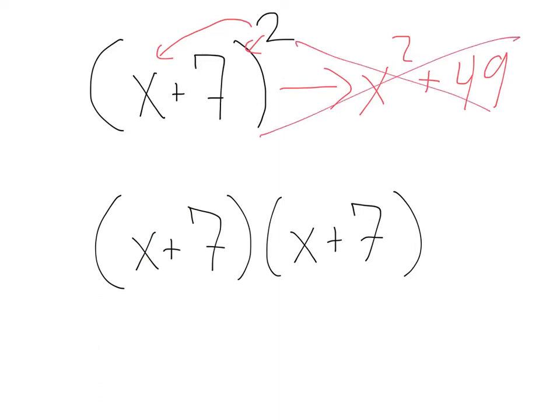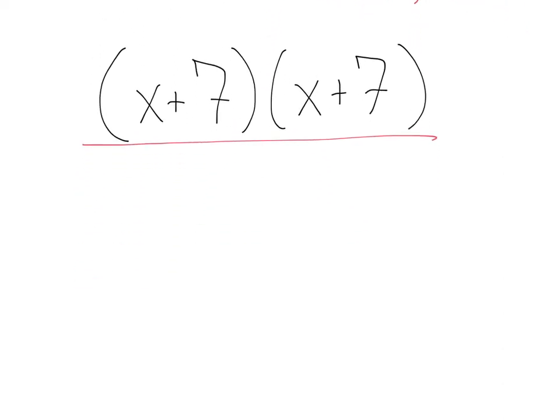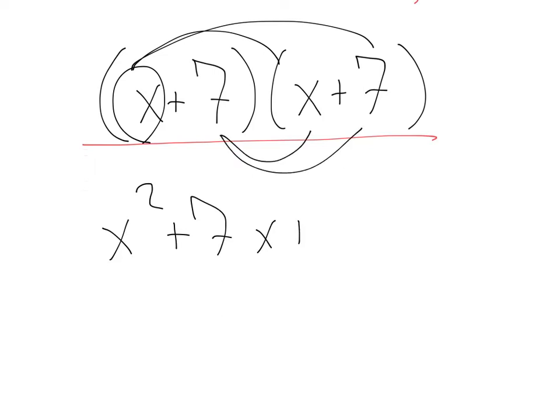Throw this out and always rewrite it so you can distribute just like we did before. If we distribute this out now, we're doing each term. That'll give us x squared plus 7x. We do our next term, 7x plus 49. We can combine our like terms and get the actual answer, which is going to be x squared plus 14x plus 49.